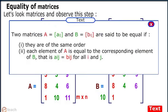Two matrices A equals Aij and B equals Bij are said to be equal if they are of the same order, and each element of A is equal to the corresponding element of B, that is Aij equals Bij for all i and j.